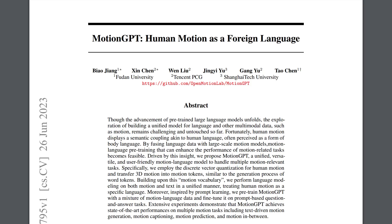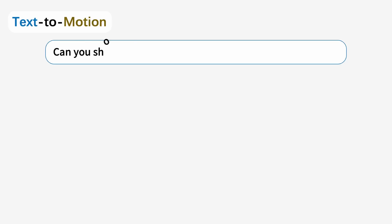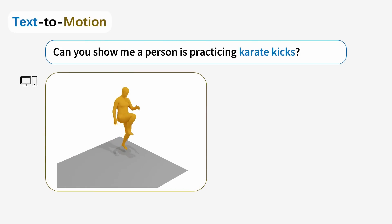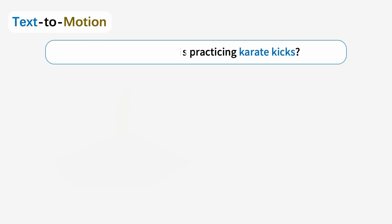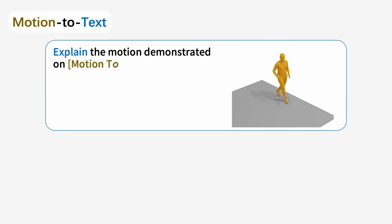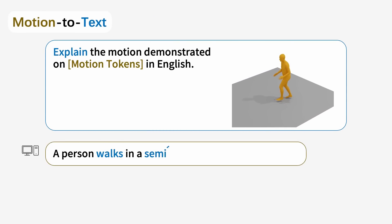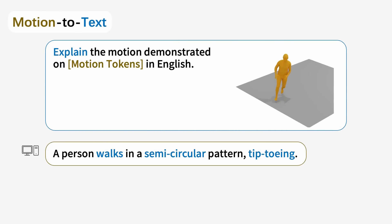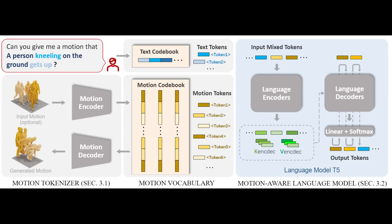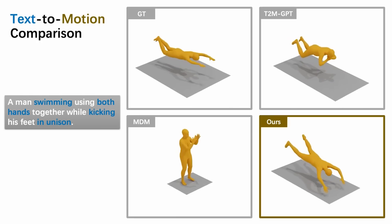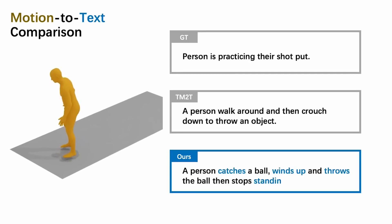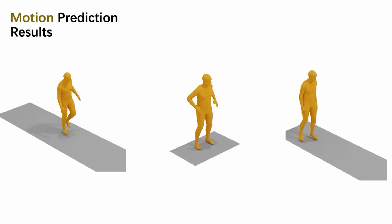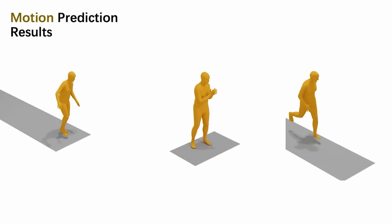Next, we have MotionGPT — a motion language model that has incorporated two modalities to generate high-quality motions or generate text descriptions on multiple motion tasks. Since body language has a semantic coupling to human language, this creates a kind of motion vocabulary which can be used together with language tokens. So it became this motion-aware language model capable of text-driven motion generation, motion captioning, motion predictions, and motion in-betweens — and it's state-of-the-art. Pretty cool, right?